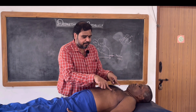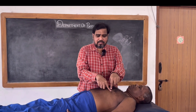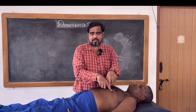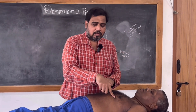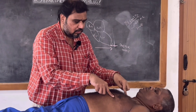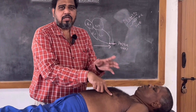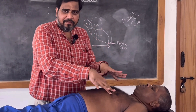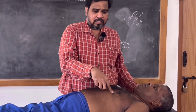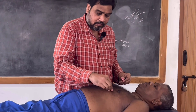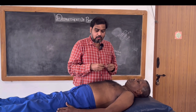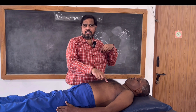Once I localized the apex beat, I want to know whether this is in the fifth, fourth, or third intercostal space. What I can do is keep this finger in place and use my left hand to calculate the intercostal space. But if you are a beginner, it is very difficult to hold that position, so what I can do is mark this point.